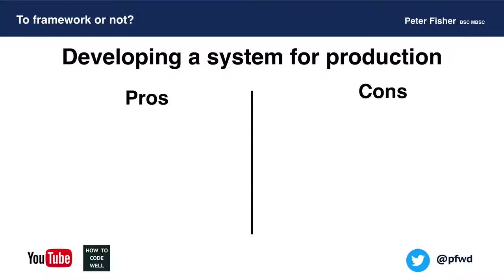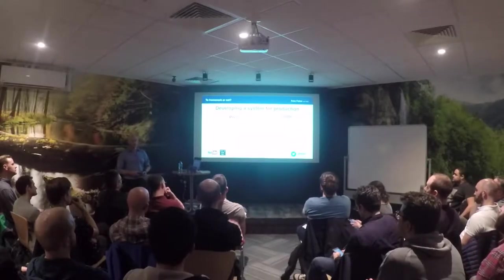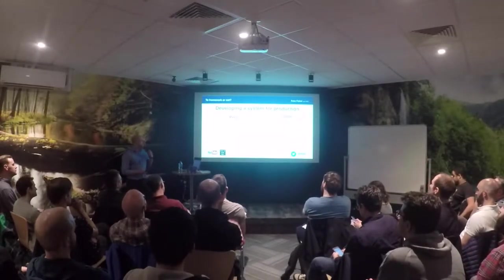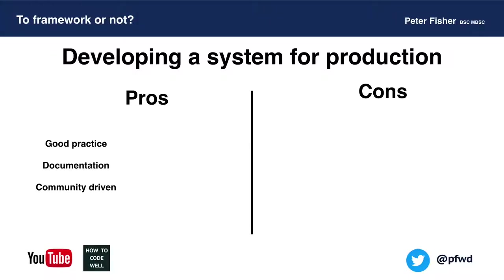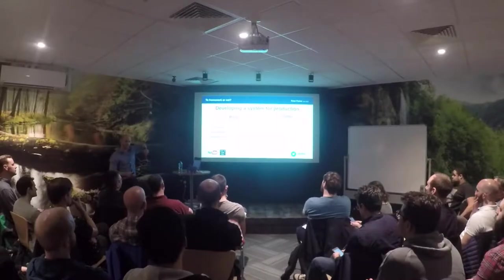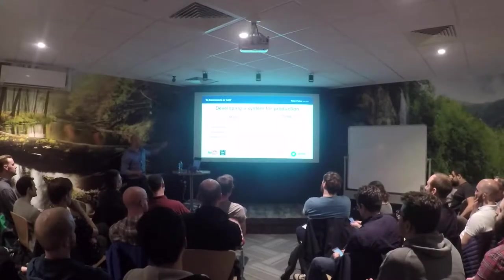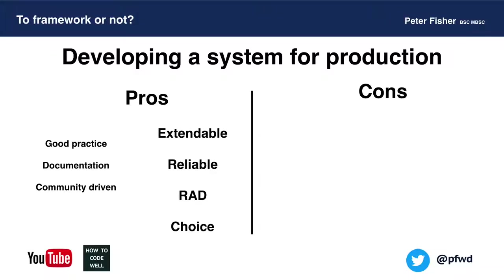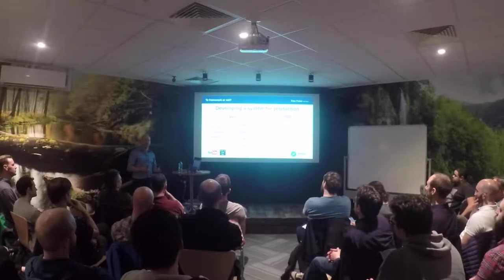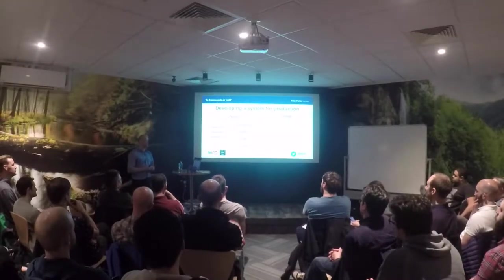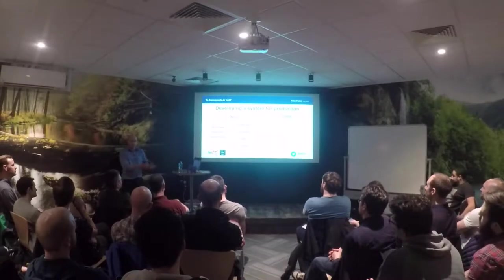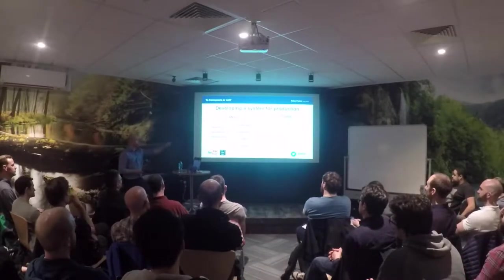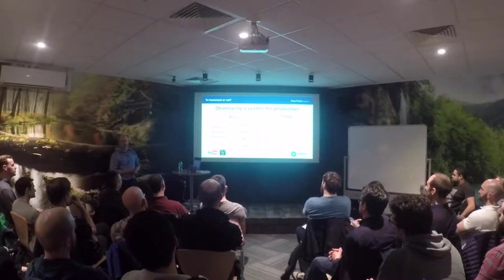Let's talk about developing a system for production — probably what we're all used to. The pros: we get good practice, documentation, and community-driven support. We also get extendability, reliability, and RAD — rapid application development — so you can quickly scaffold and build things in front of clients and customers. And you've got choice, which I'll talk about in just a second.